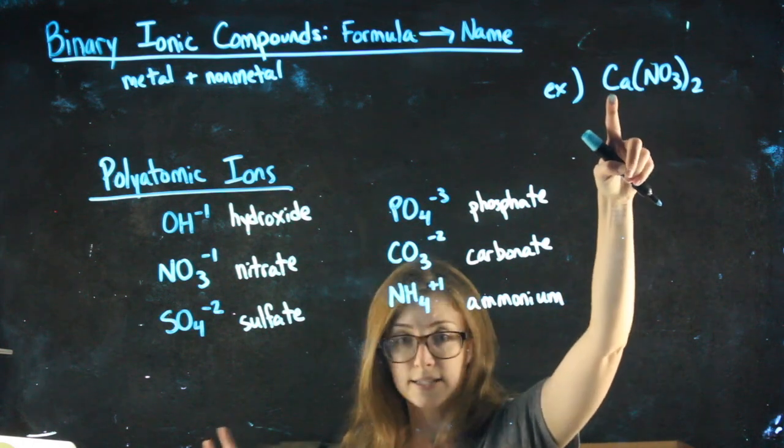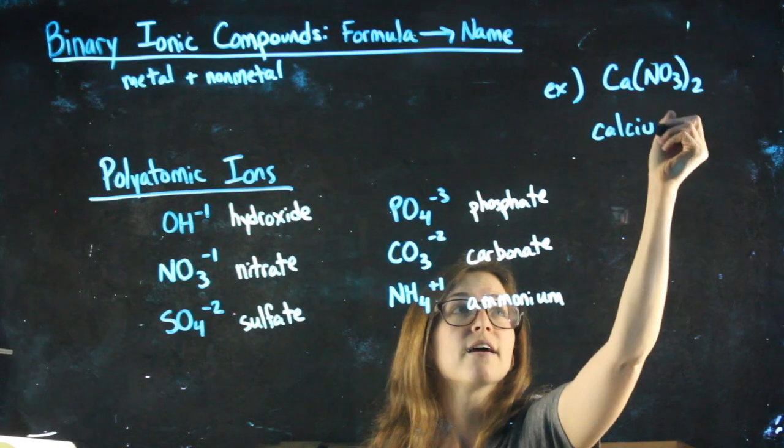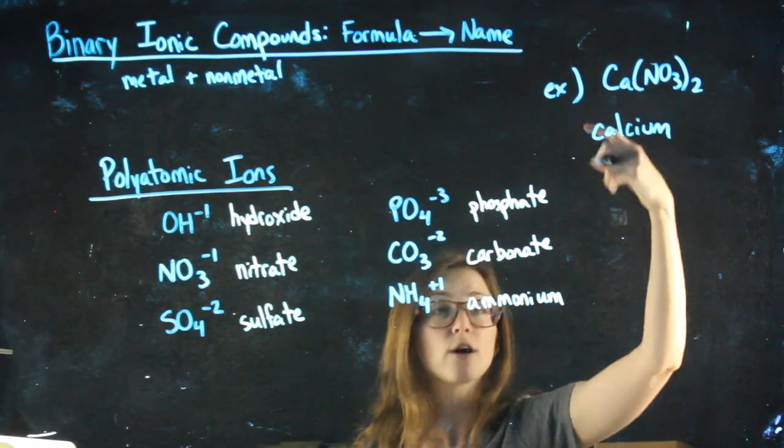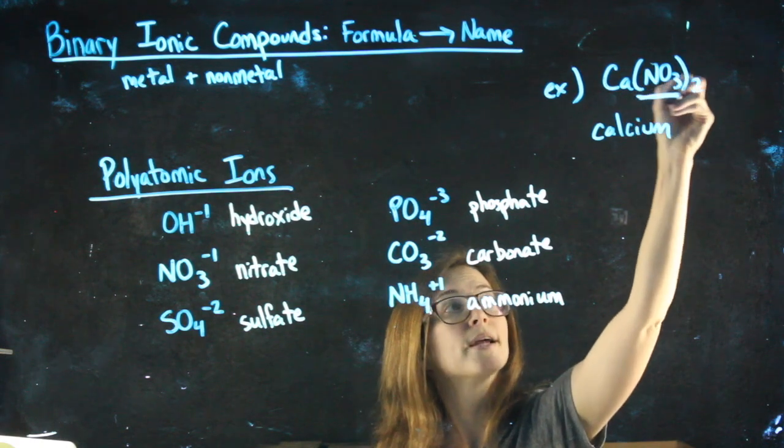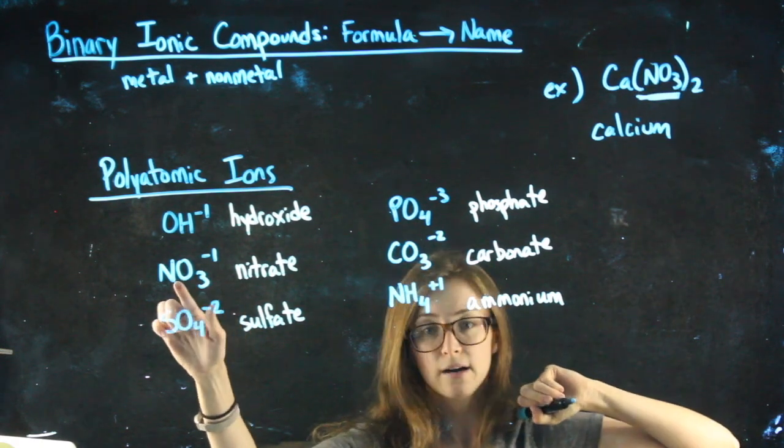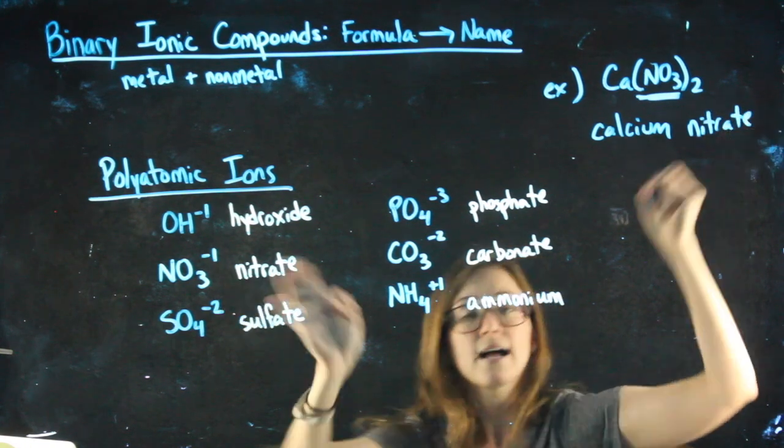So I'd see calcium is the first thing, it's my metal. I name it without changing anything. And then normally I look at my non-metal and change the ending to ide, but since NO3 is a polyatomic ion, I'm just going to take its name. Calcium nitrate.